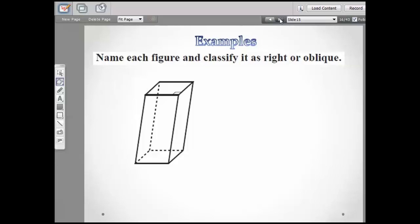It says name each figure and classify it as right or oblique. I don't believe in these answers I actually named them. I just said they were right or oblique. But let's go ahead and look at this. These are all rectangles. The base is what we're looking at. The base is rectangle. So this is going to be a rectangular prism. And it's going to be oblique because the lateral faces are not perpendicular to the base. There you go, oblique.